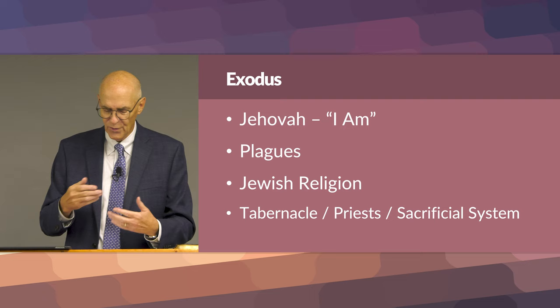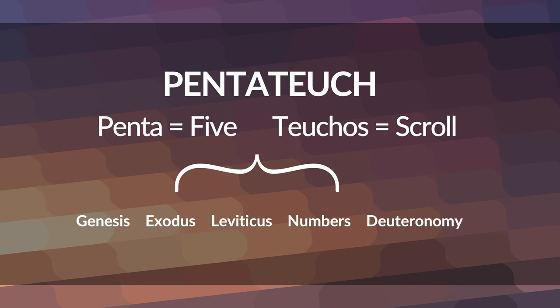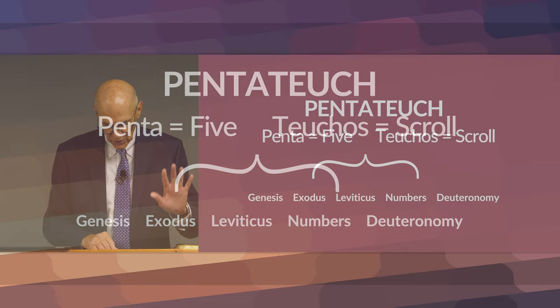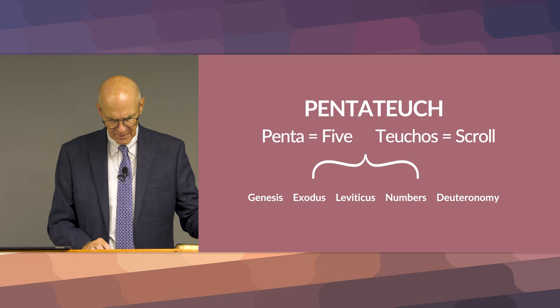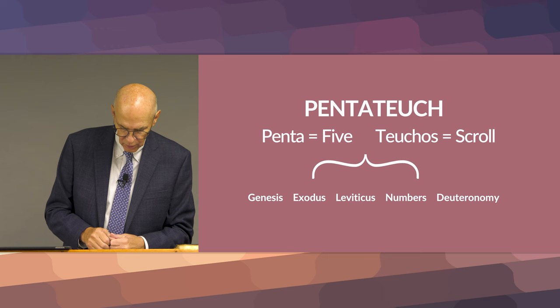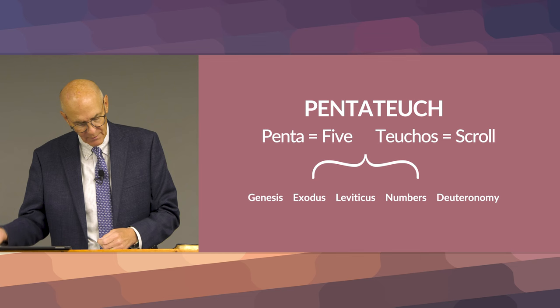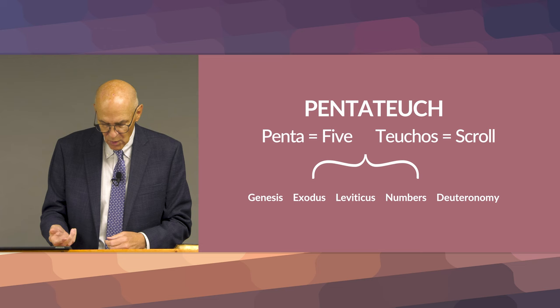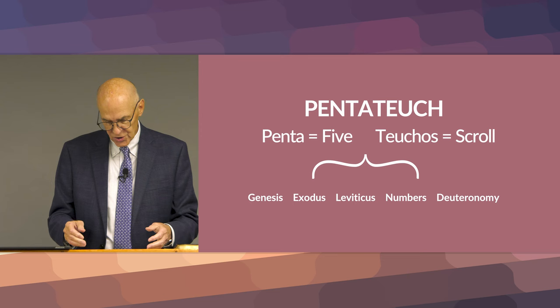We start with the critical introduction — authorship and date. The book of Exodus is part of the Pentateuch, which is the term used for the first five books of the Bible: Genesis, Exodus, Leviticus, Numbers, Deuteronomy. The Pentateuch is made up of two Greek words — penta, meaning five, and tukos, meaning scroll. The Jews refer to the first five books as the Torah, or the five books of Moses, or the books of the law. Moses has traditionally been considered the author of this book, even though the book itself does not mention its author.